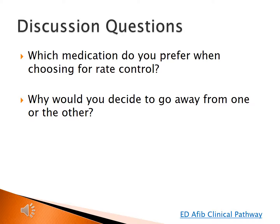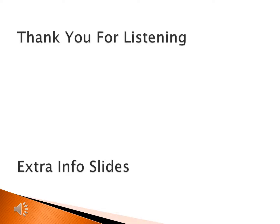A couple of thought questions: which medication do you prefer for rate control, and why would you choose one over the other? The data does not clearly indicate which is more efficacious for acute therapy. While diltiazem has a faster onset, the AFIRM trial shows patients do better long-term on beta blockers. In acute settings, consider patient disease states — for reduced ejection fraction heart failure or severe asthma, a beta blocker is preferred. For patients with severe asthma, avoid beta blockers. Thank you for listening to this presentation on antiarrhythmic medications in the emergency department, focusing on metoprolol and diltiazem.